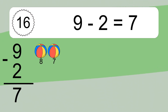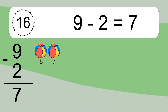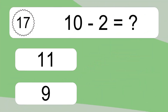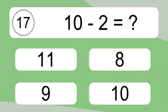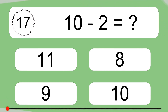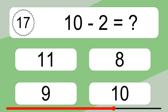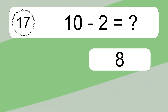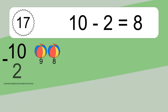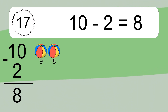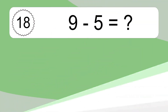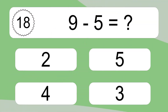9 minus 2 equals what? 9 minus 2 equals 7. Let's count it: 8, 7. 10 minus 2 equals what? 10 minus 2 equals 8. Let's count it: 9, 8.